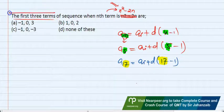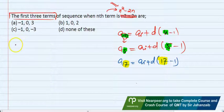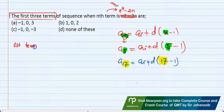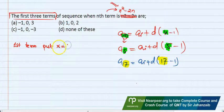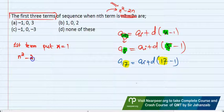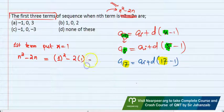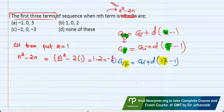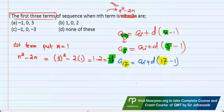Here I have to find the first three terms. I have the formula that is n square minus 2n. If I have to find the first term, then n is equal to 1, so n square minus 2n becomes 1 square minus 2 into 1, so 1 minus 2, here I have minus 1. This is the first term.